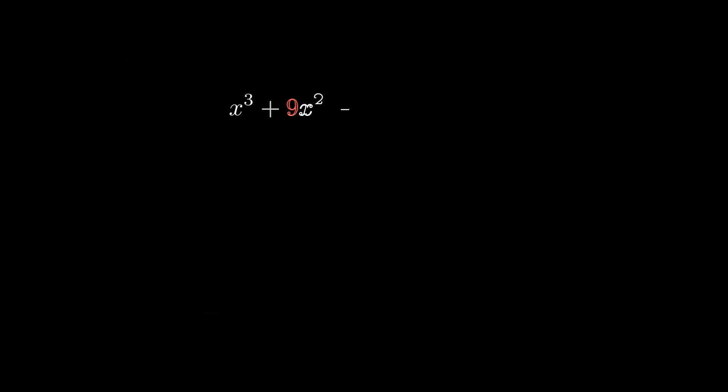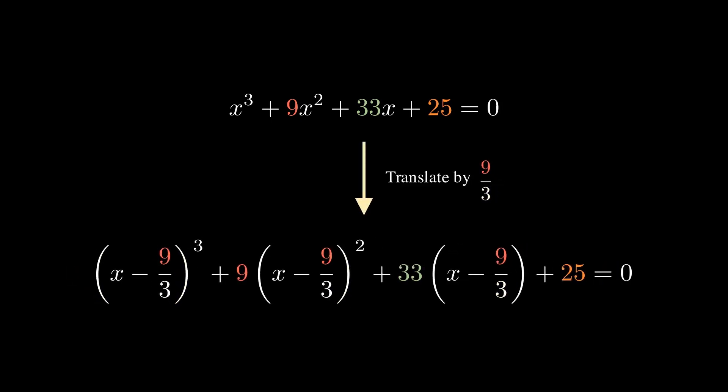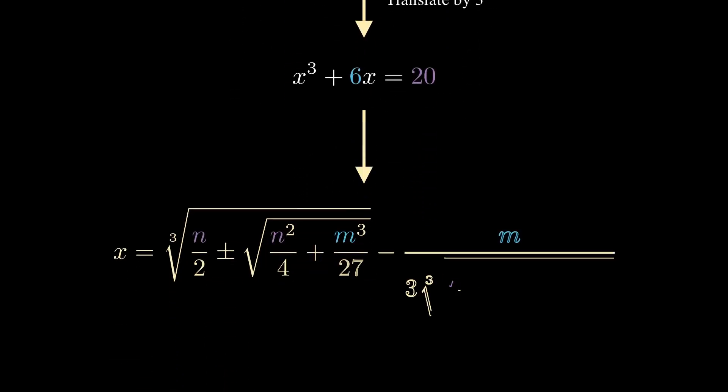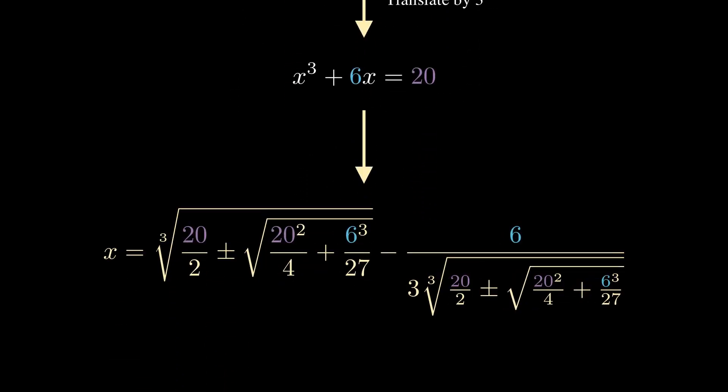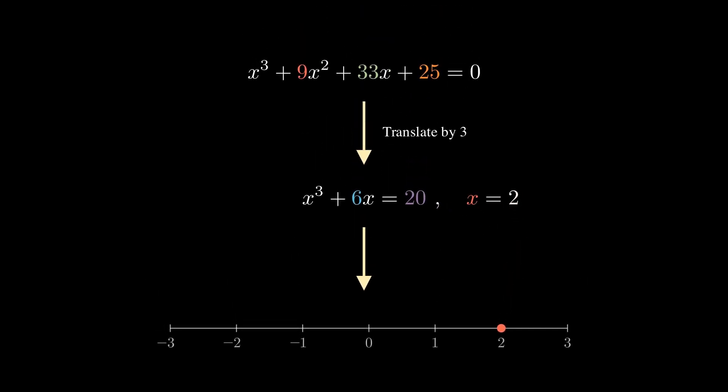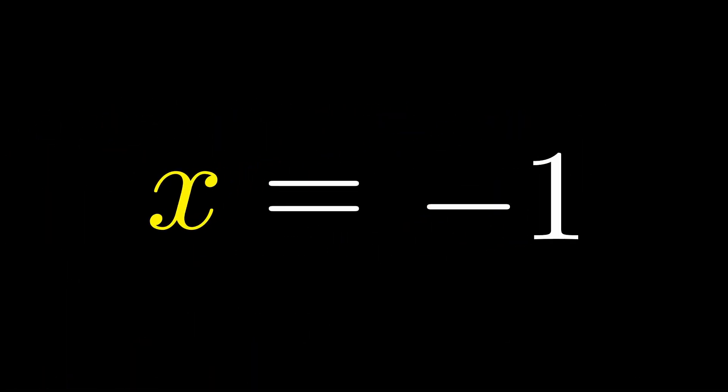Let's look at the quick example. We translate the entire equation by b/(3a), which basically is 3, in order to get a depressed cubic equation. This equation can be solved by using the formula from earlier. Here, we only get one solution, which is x equals 2. Now, in order to get the solution for our original equation, we just have to undo the operation where we translated the equation by 3. So, if we translate the solution by -3, we will get the solution we were looking for, namely x equals -1.